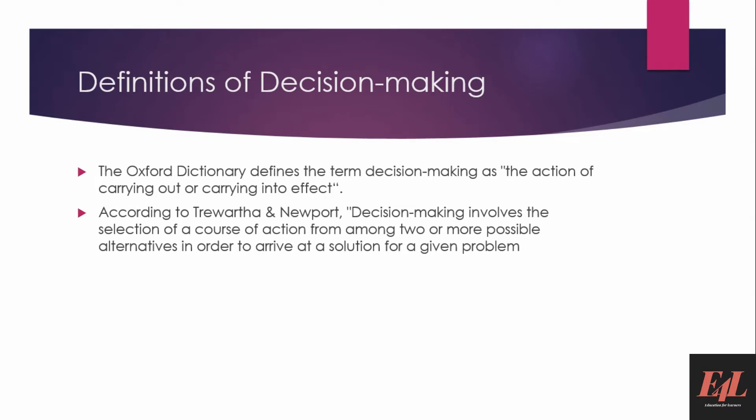The Oxford Dictionary defines decision making as the action of carrying out or carrying into effect. According to Tribertha and Newport, decision making involves the selection of a course of action from among two or more possible alternatives in order to arrive at a solution for a given problem.